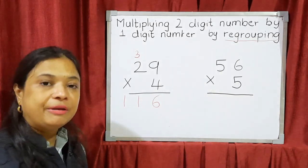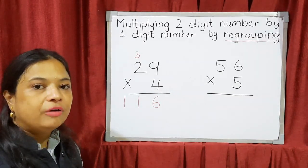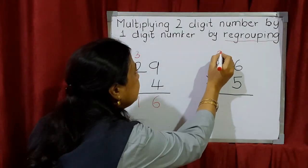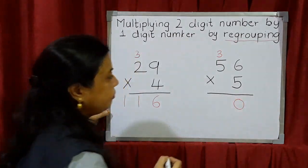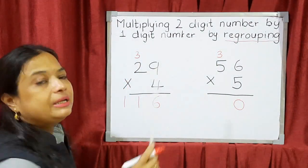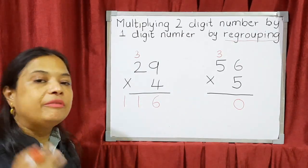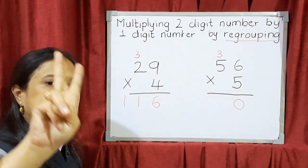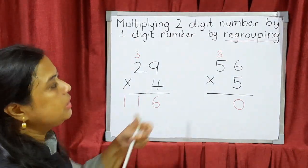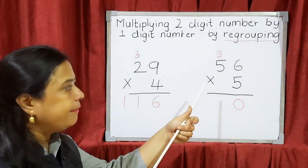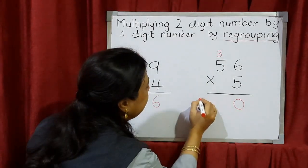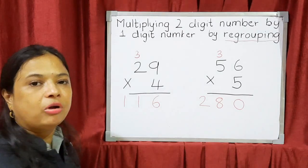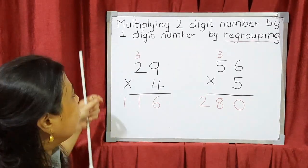Now 56 multiplied by 5. We say the table of 5. 5 sixes are 30. So 0 goes in the ones column and 3 is the carry to the tens column. Now 5 fives are 25. 25 plus 3 carry: keep 25 in the mind and count — 26, 27, 28. The answer is 280. The numbers must come in their proper columns.